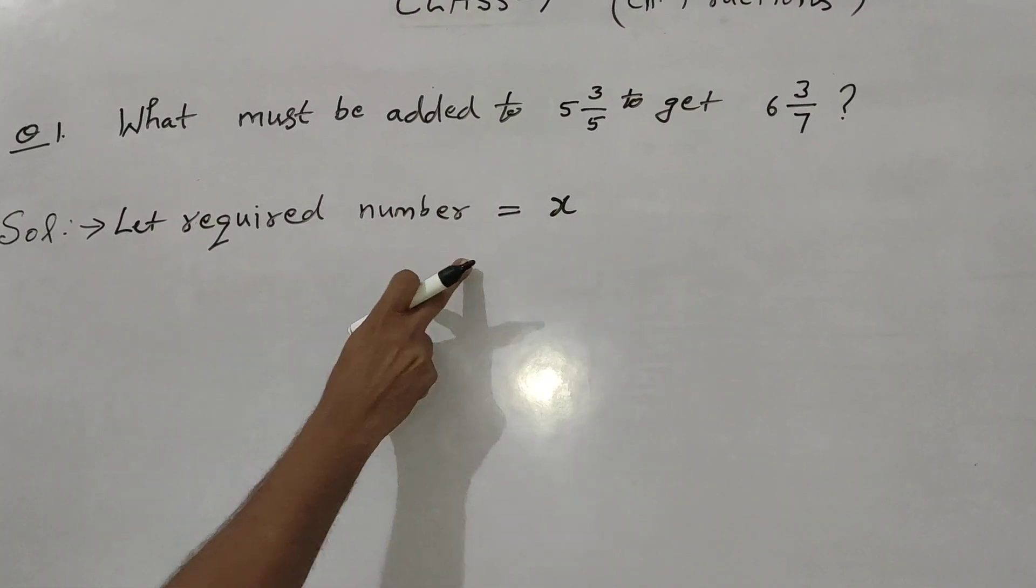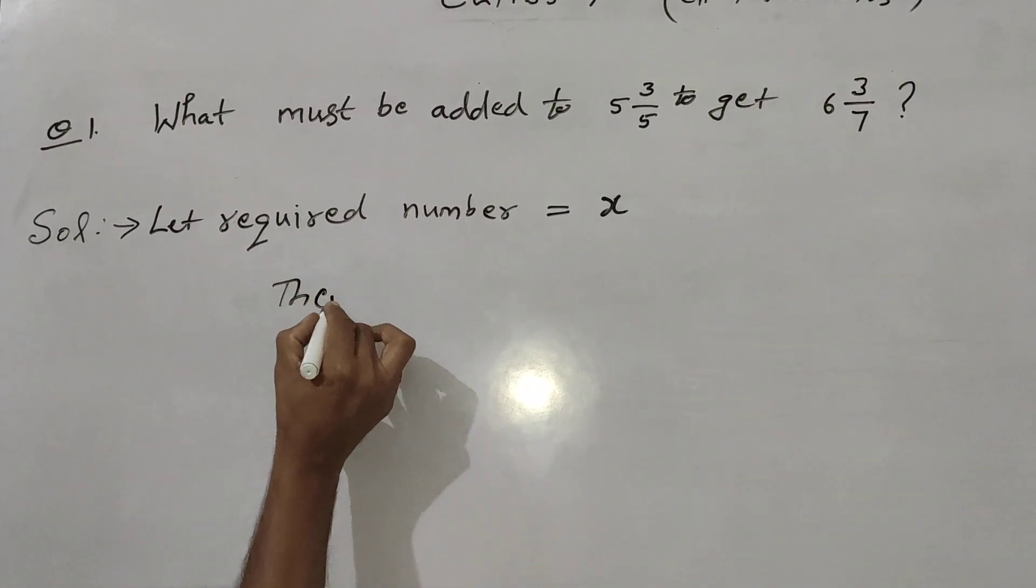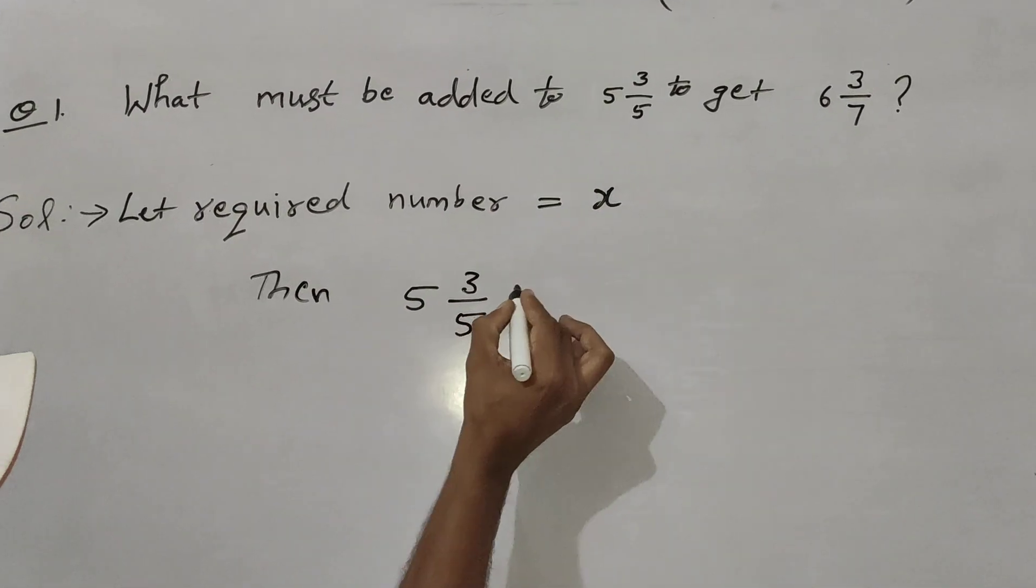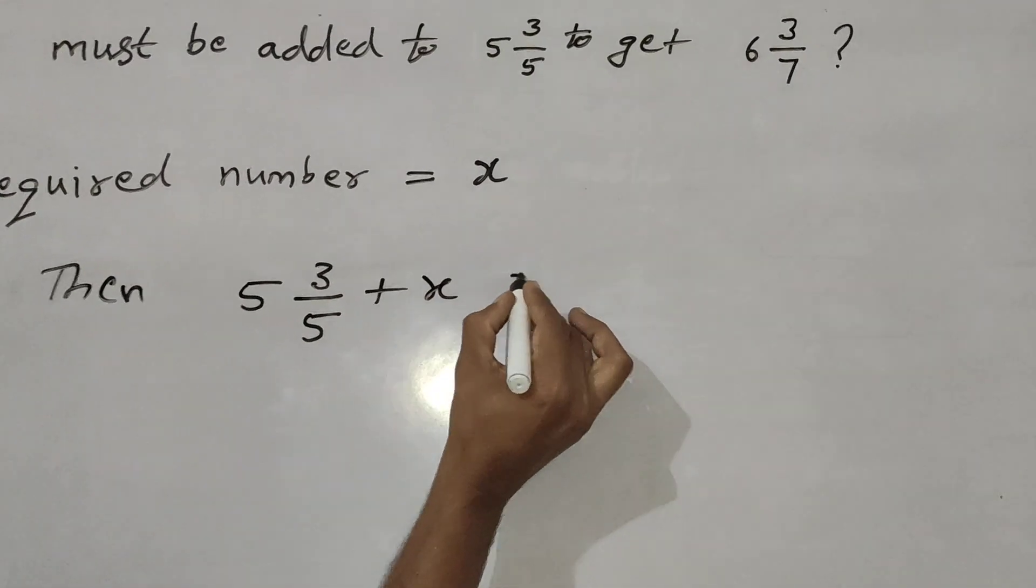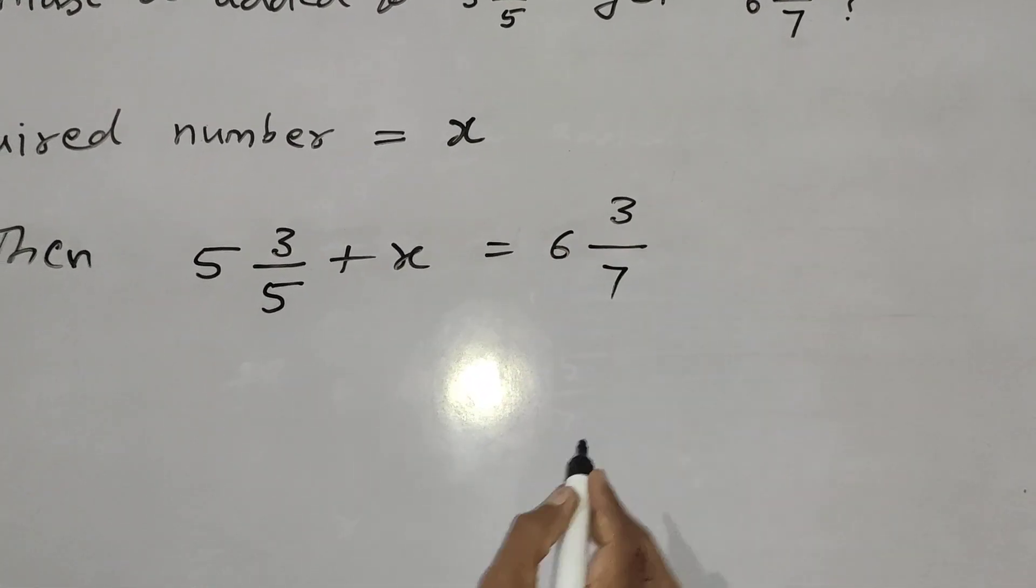Required number is equal to X. Then, 5, 3 by 5 plus X is equal to 6, 3 by 7.